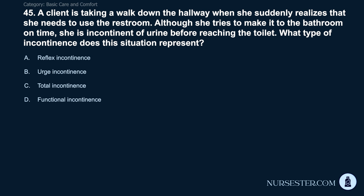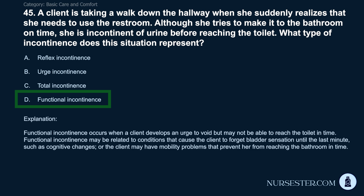Question 45: A client walking down the hallway realizes she needs the restroom. Although she tries to make it in time, she is incontinent of urine before reaching the toilet. What type of incontinence is this? A) Reflex incontinence. B) Urge incontinence. C) Total incontinence. D) Functional incontinence. Correct answer: D. Functional incontinence. Functional incontinence occurs when a client develops an urge to void but cannot reach the toilet in time. It may be related to cognitive changes causing the client to forget bladder sensation, or mobility problems preventing her from reaching the bathroom.